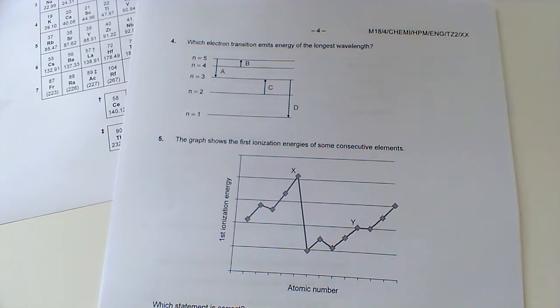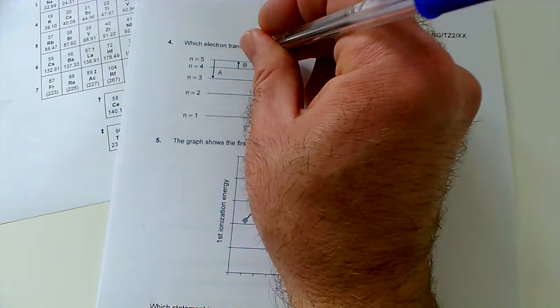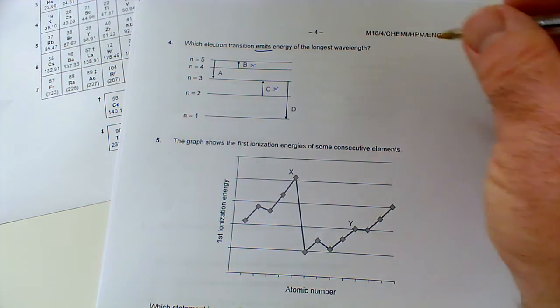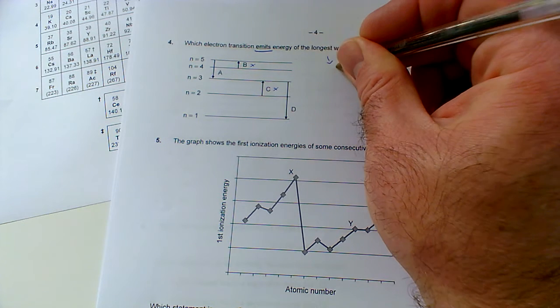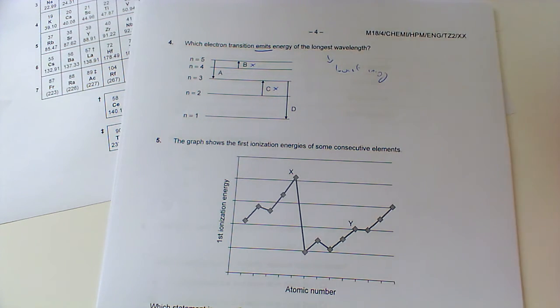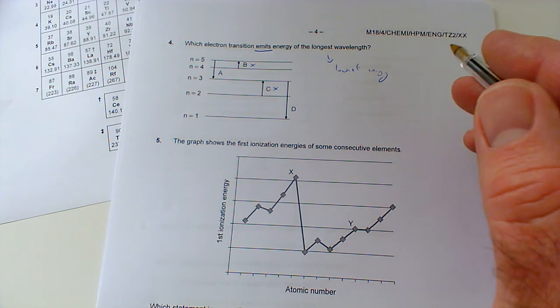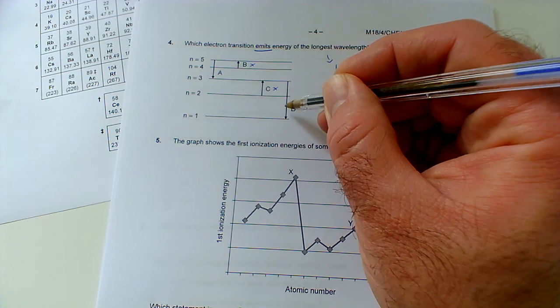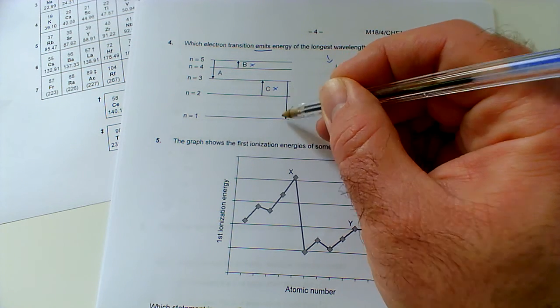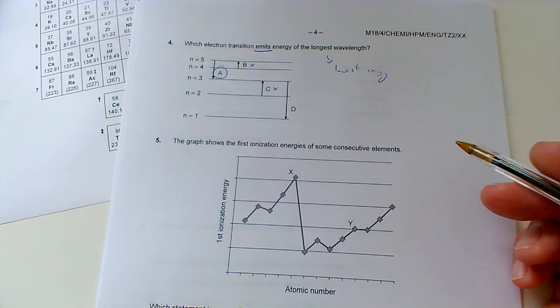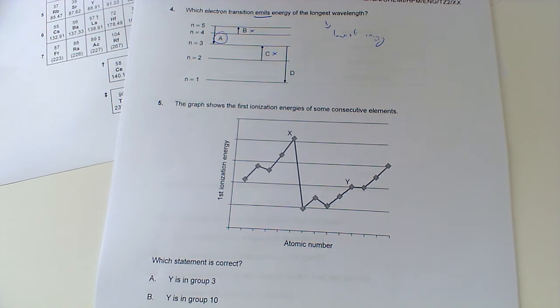Okay, which electron transition emits energy of the longest wavelength? So it's emits. So if it's emitting energy it's not going to be this one or this one which are absorbing energy. And longest wavelength will be lowest energy, remember, because energy and frequency go in the opposite direction to wavelength. So high energy, high frequency, low or short wavelength. So we're looking for the one which is the lowest energy. Well this one's going to be a big change in energy, that's going to be visible and ultraviolet there. So this is ultraviolet overall, whereas this one's only going to be infrared. So we're going to go with A. That's the smallest change in energy which will be the longest wavelength emitted.